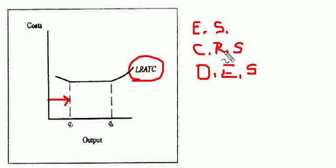Constant returns to scale are achieved when long-run average total costs have flattened out. So that's actually between this output level up to Q2.